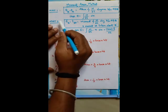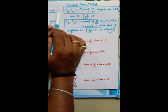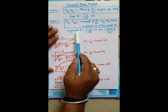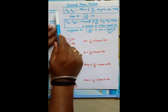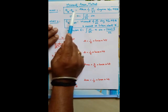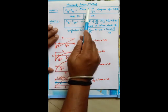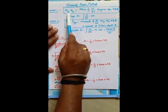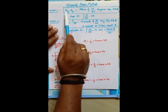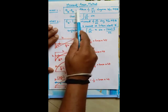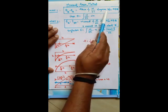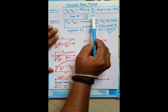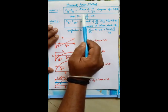To briefly review the theorems: there are two theorems with respect to the moment area method. Moment area theorem 1 is for slope — the change in slope between any two points on the elastic curve must equal the area of the M/EI diagram between those two points. So theta_B minus theta_A equals the area of the M/EI diagram between A and B, which is the integration of (M/EI) dx.